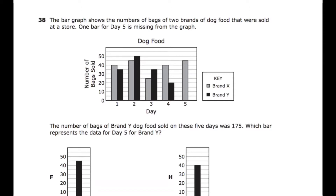Here's the last section of our sim review, questions 38 through 50. The bar graph shows the number of bags of two brands of dog food sold at a store. One bar for day five is missing from the graph. The lighter brand is Brand X, the darker one is Brand Y. On day five, we're missing the information for Brand Y. The total number of bags of Brand Y sold over five days was 175.